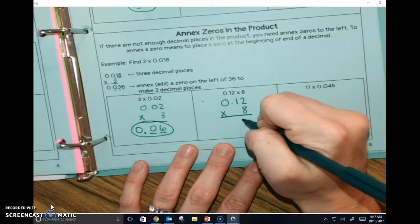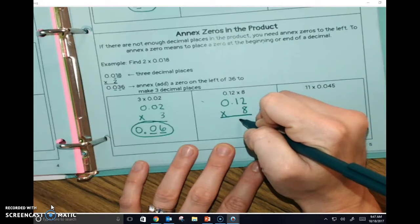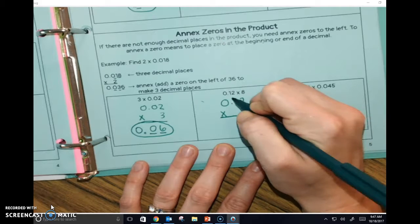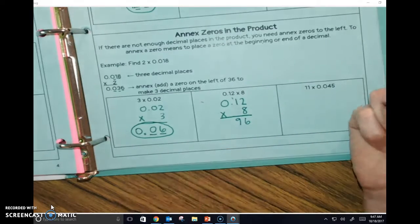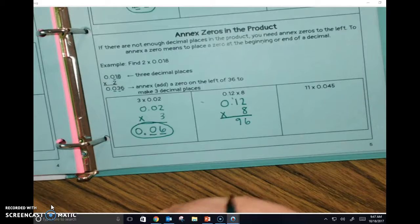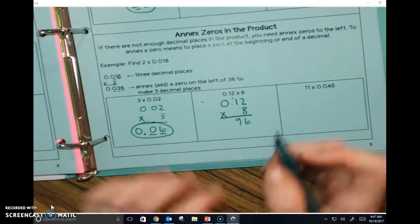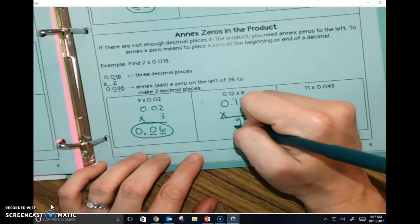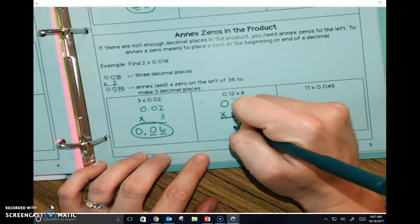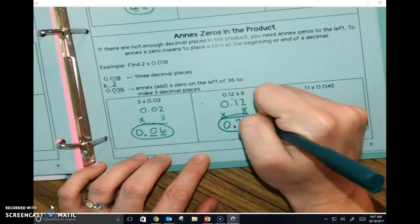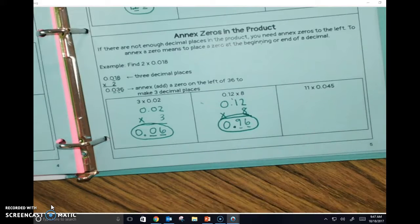I'm going to do 0.12 times 8. What's 12 times 8? 96. How many decimal places do we need? Two. This one we don't have to annex anything, do we?